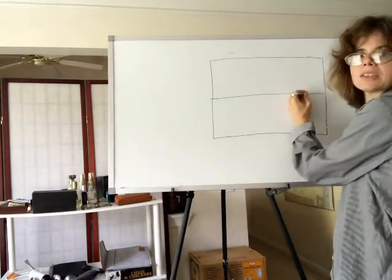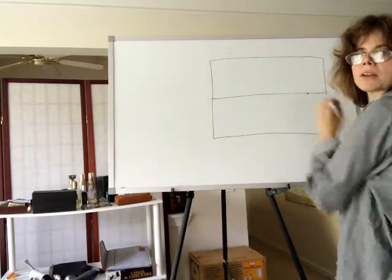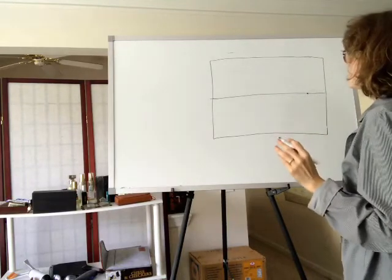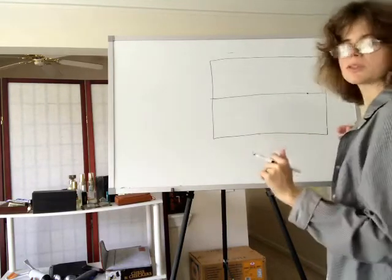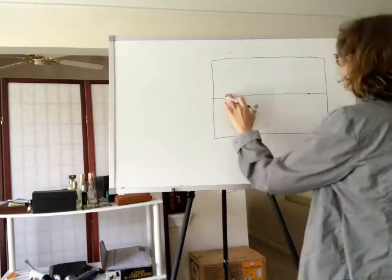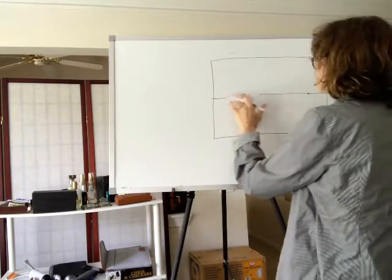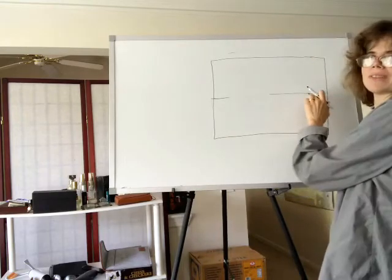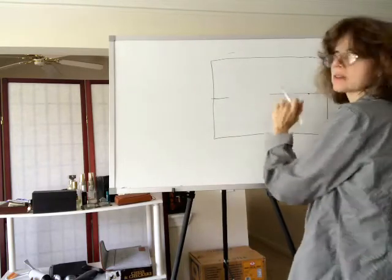We'll get the vanishing point right here. I'll start by drawing an object. This is one-point perspective — there's our one vanishing point, that's all we need.